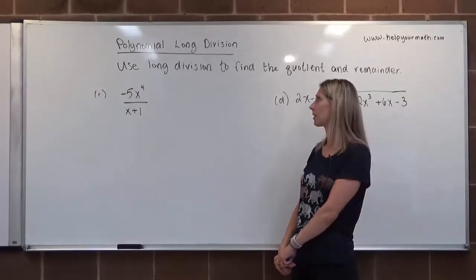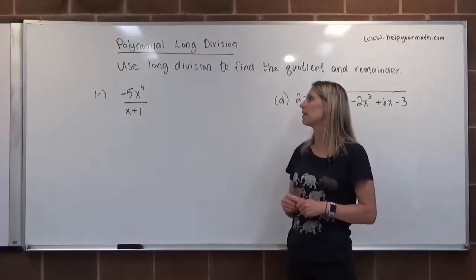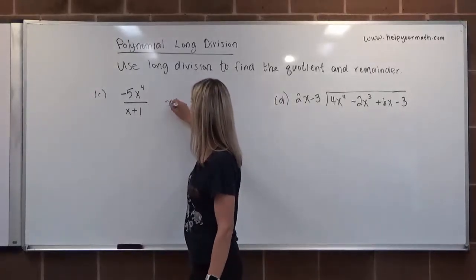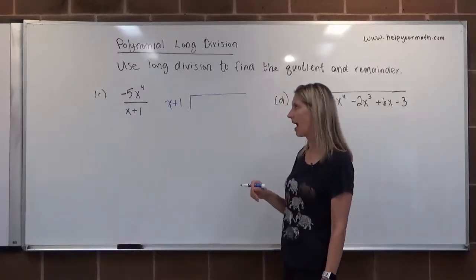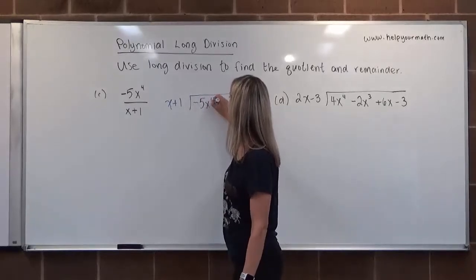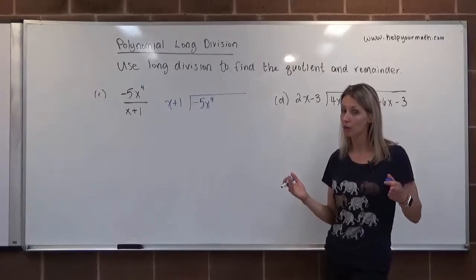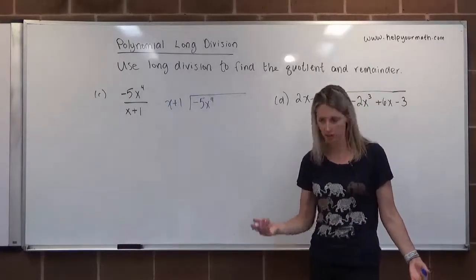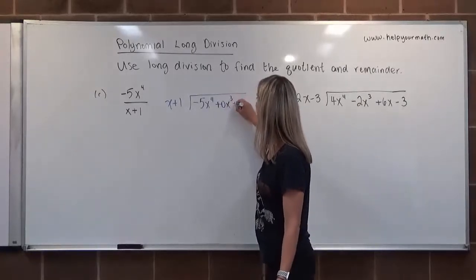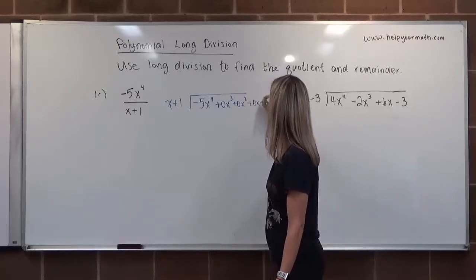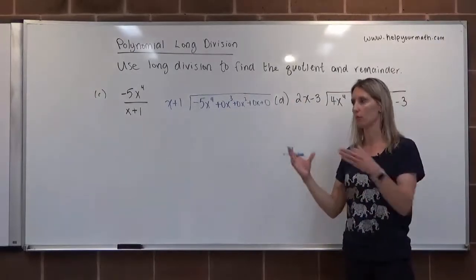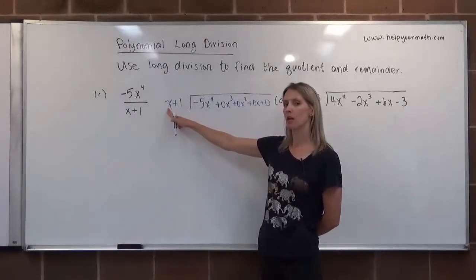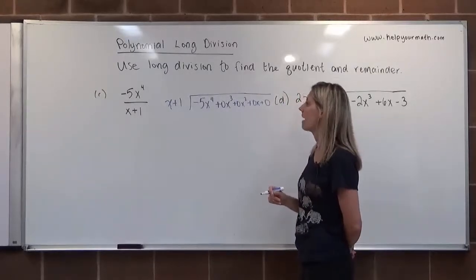Let's look at a few more examples. In part C, we have -5x⁴ divided by x+1. When we set up the long division, x+1 is the divisor. Since we only have one term in this polynomial, it's going to be really helpful to include all terms from x⁴ down to a constant — so we write -5x⁴+0x³+0x²+0x+0.